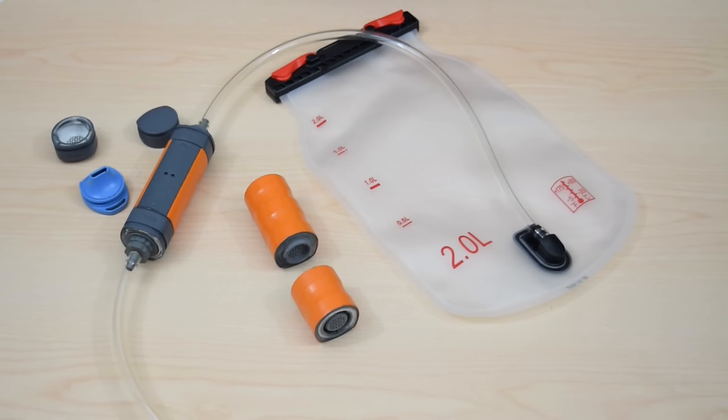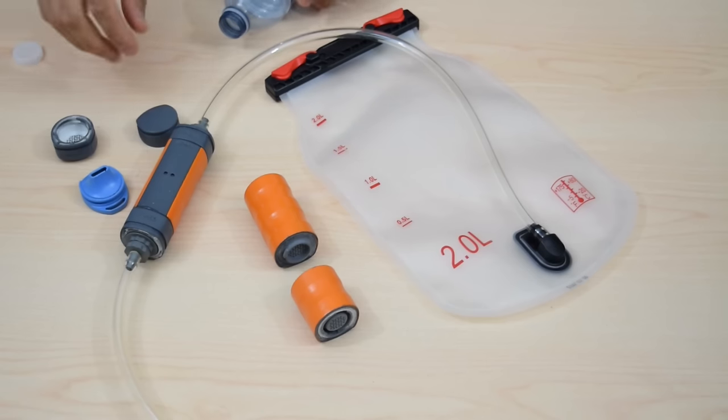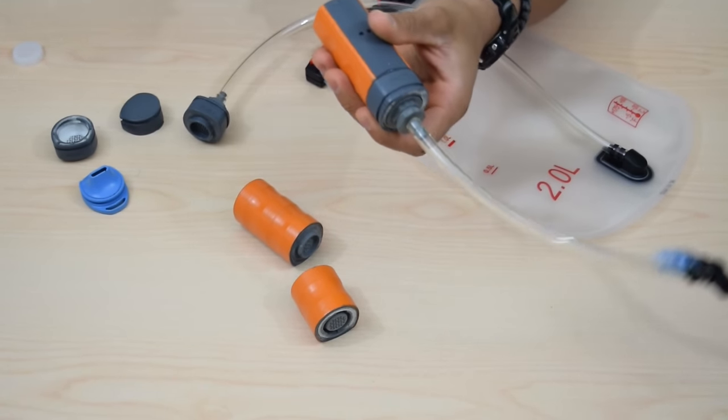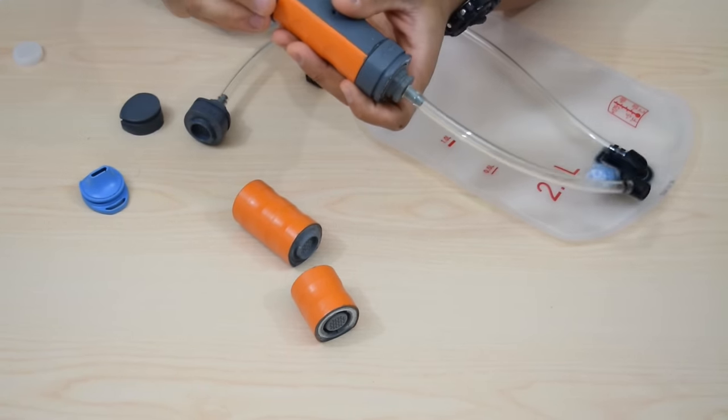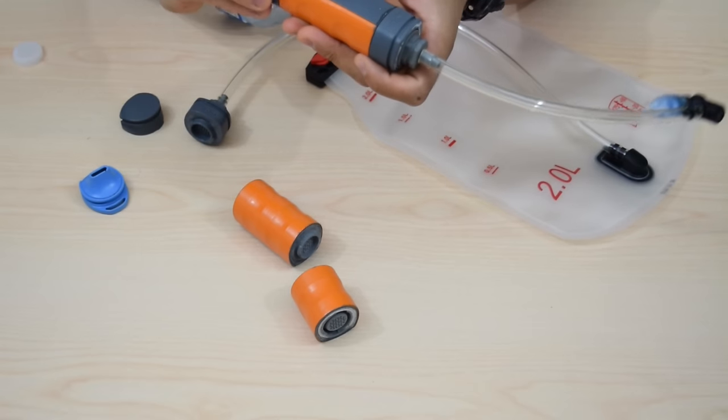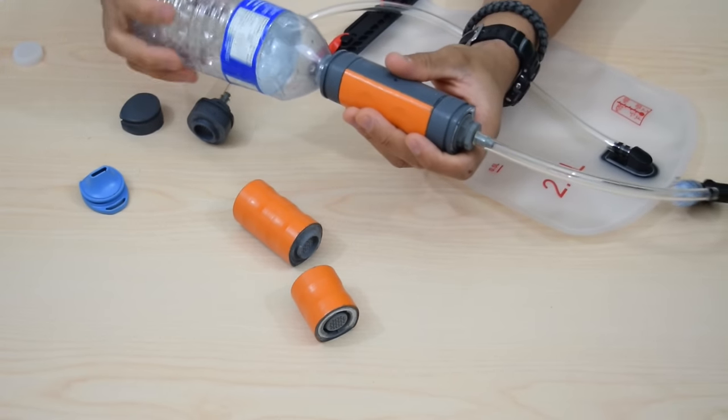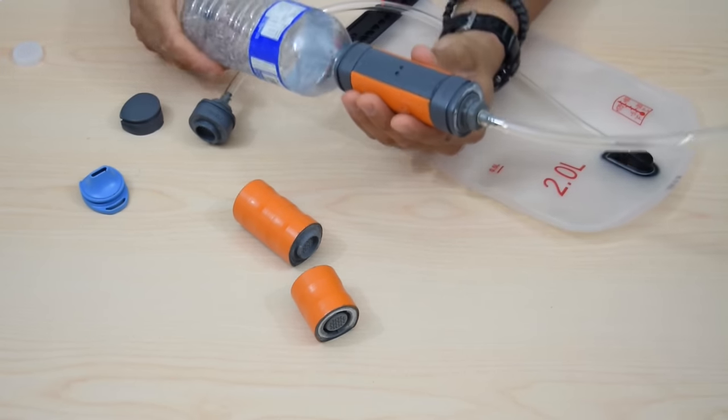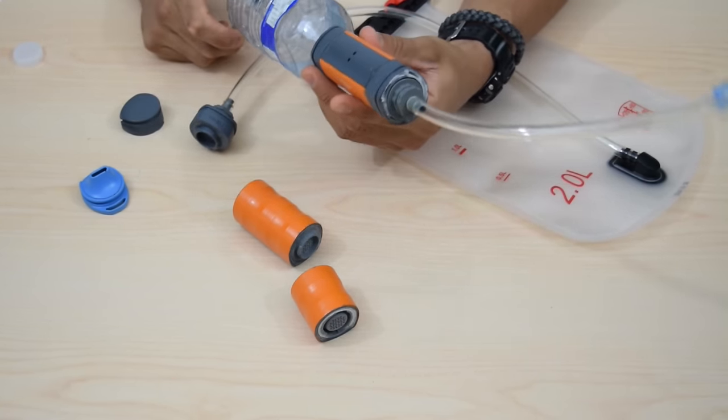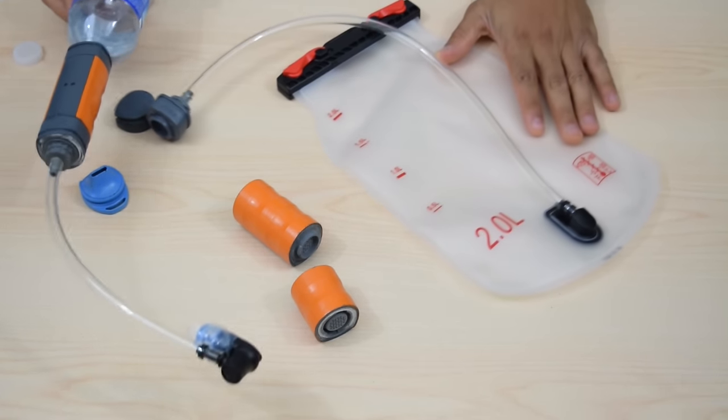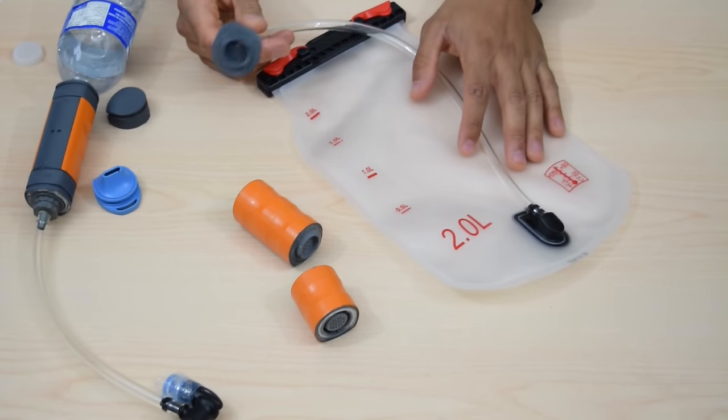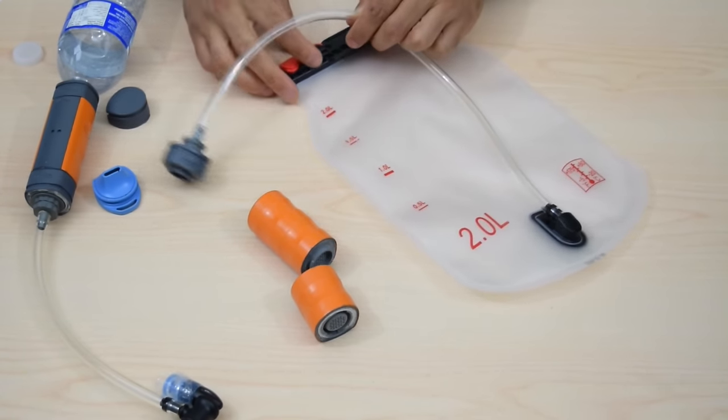I really like this water bladder idea because the thing I don't like about the life straw and the survivor filter and things like that is that you have to stop and use it. And I know some of them are compatible with water bottles like this one is here. I'll just demonstrate that for you.